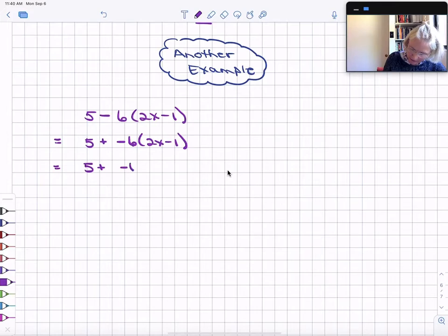5 plus negative 6 times 2x minus negative 6 times 1. So highlighting again that our operation does not change. These stay the same.